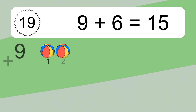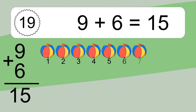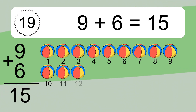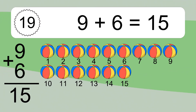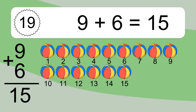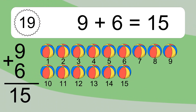9 plus 6 equals what? 9 plus 6 equals 15. Let's count it. 1, 2, 3, 4, 5, 6, 7, 8, 9, 10, 11, 12, 13, 14, 15.